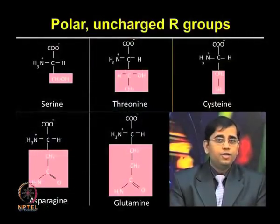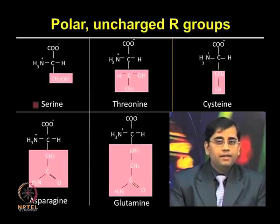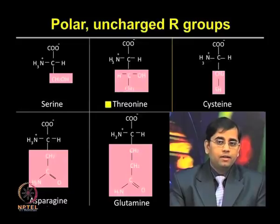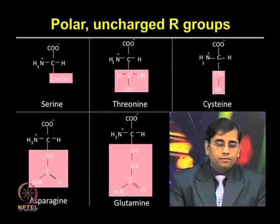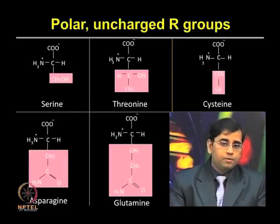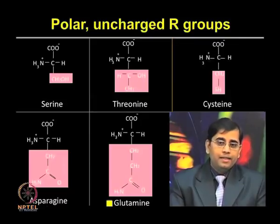The next category is polar uncharged R groups. Serine resembles alanine in structure but contains a hydroxyl group. Threonine resembles valine but also contains a hydroxyl group and has an additional asymmetric center. Cysteine is similar to serine but contains a sulfhydryl or thiol group; two cysteine molecules can form a disulfide bond. Asparagine contains carboxamide side chains as a functional group. Glutamine's side chain is the amide of glutamic acid, formed by replacing the side-chain hydroxyl group with an amino functional group.